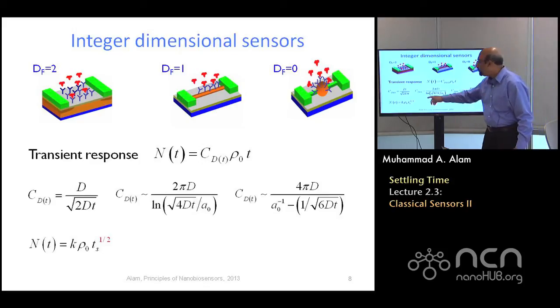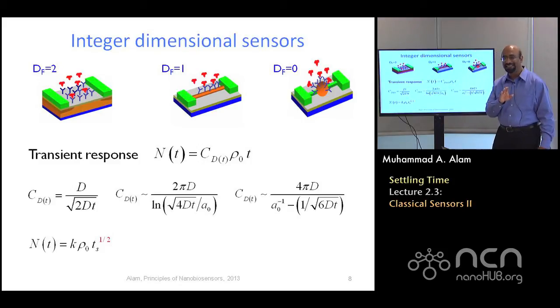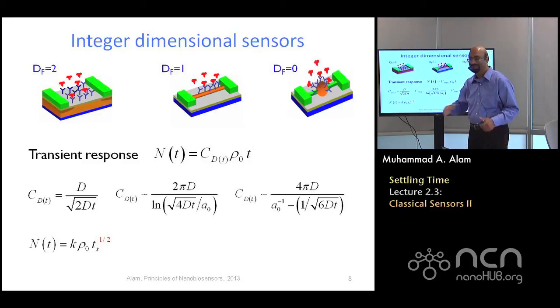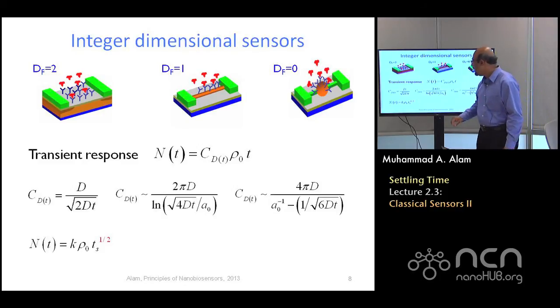Now, if you put it in, this value in here, the square root of t will cancel and will give square root of t dependence for one-dimensional sensor. Do you remember this is exactly the result we had when we analyzed the system by the simple approach of diffusion triangle.